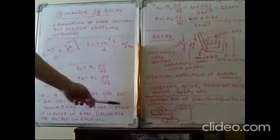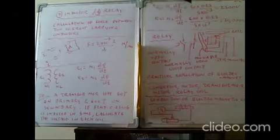Similarly, e2 = N2 × dΦ/dt. For a transformer problem: the transformer has 50 turns on the primary and 600 turns on the secondary. A flux of 0.25 Wb is induced in 5 milliseconds. We calculate e1 = N1 × dΦ/dt = 50 × (0.25 / 5 × 10⁻³) = 2000 V.